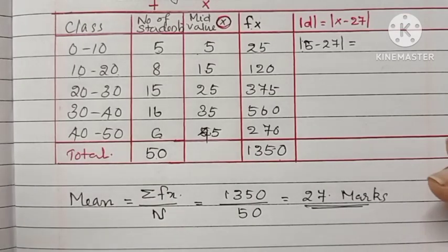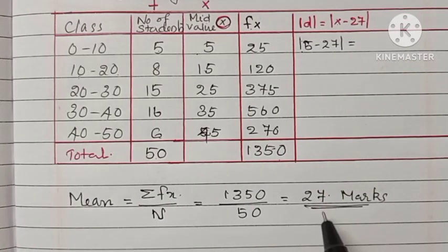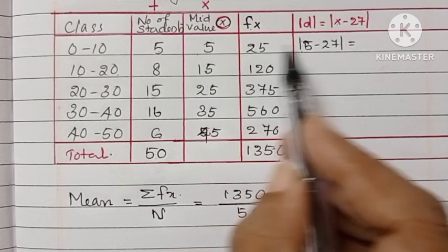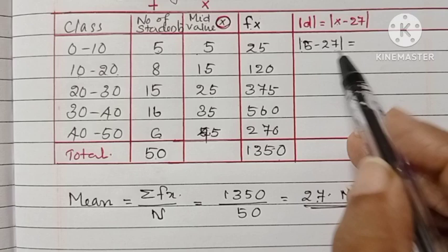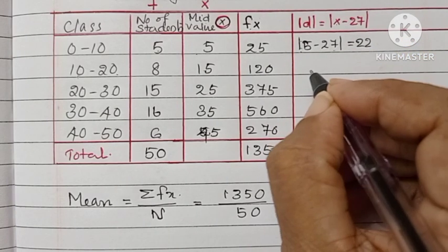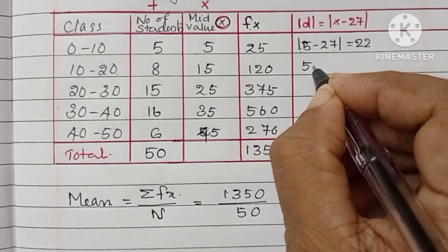After that, we have to find the modulus d. Modulus d is equal to x minus 27. x is from the mid-value. Therefore, x minus 27, we will get minus 22. We are writing only 22 because it is modulus.